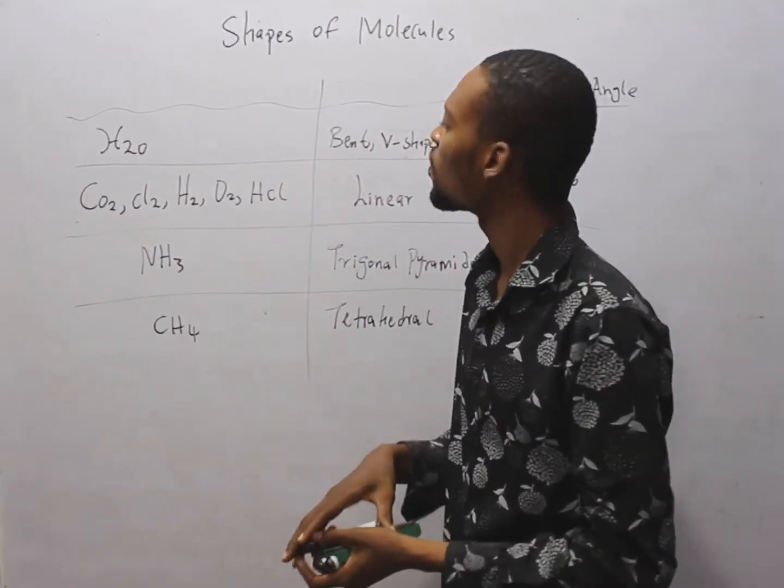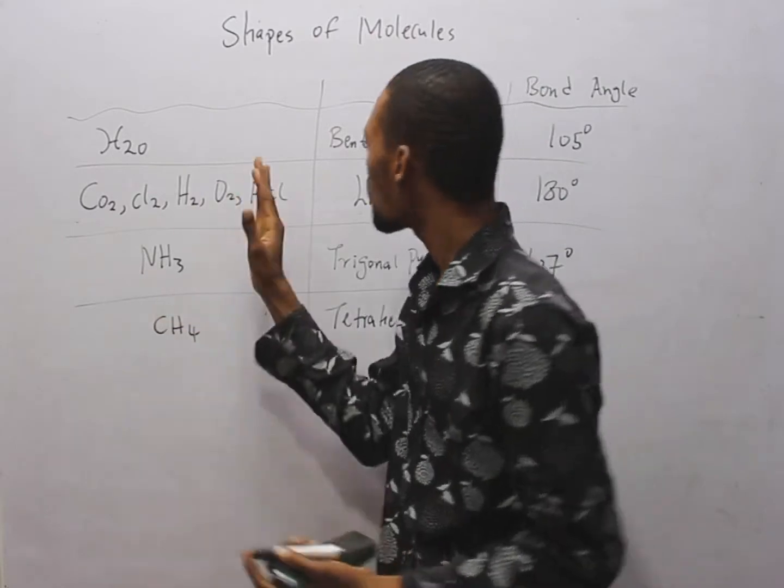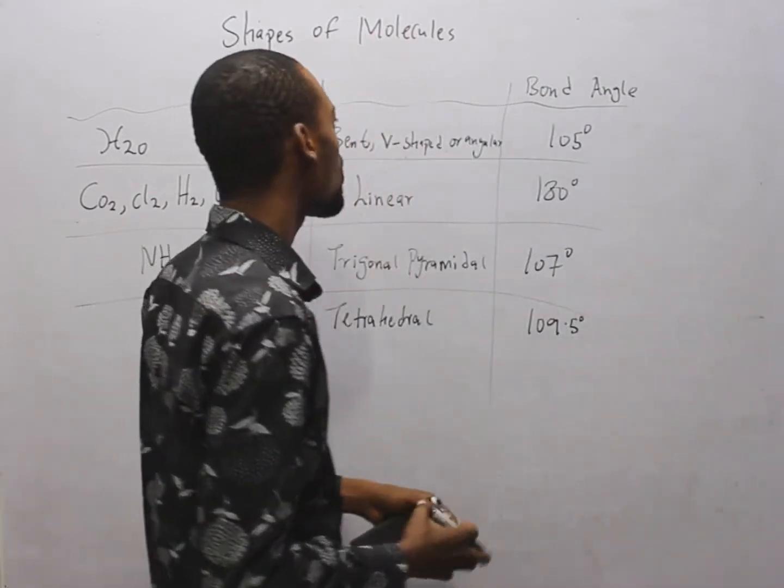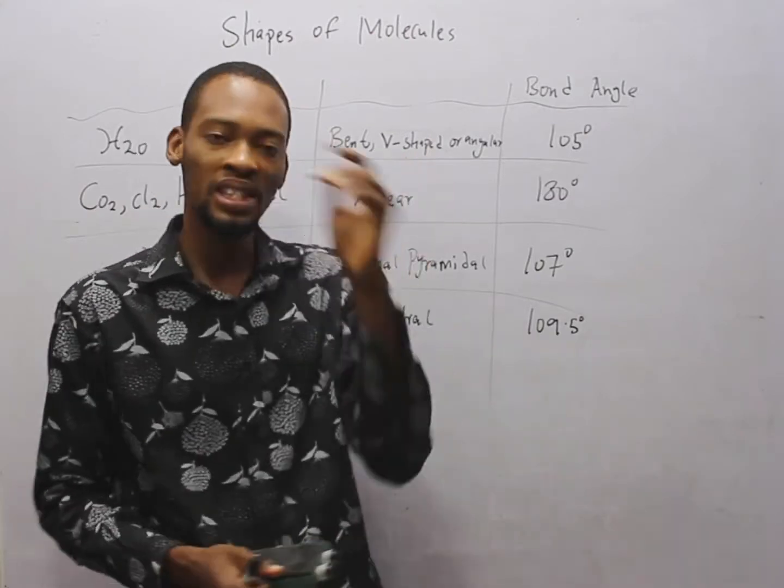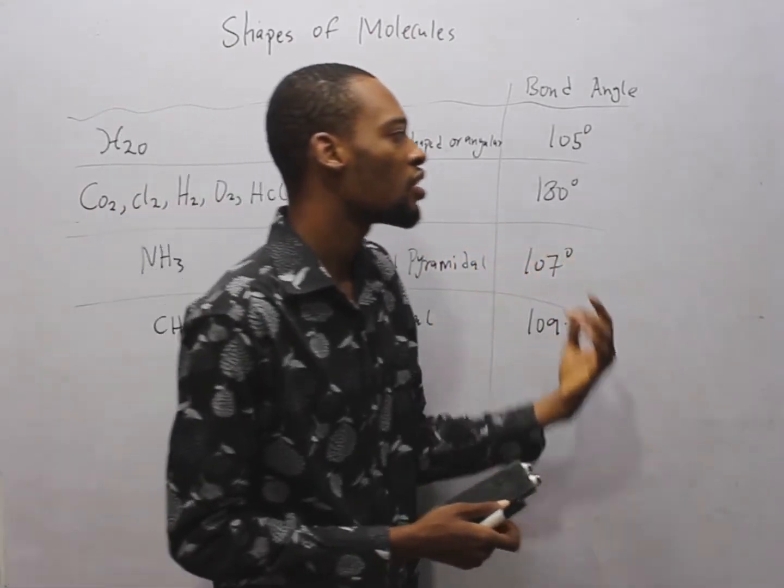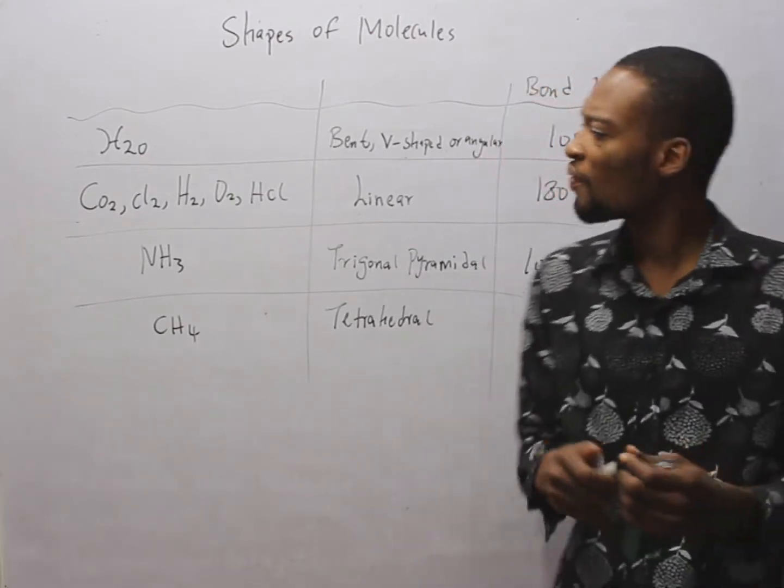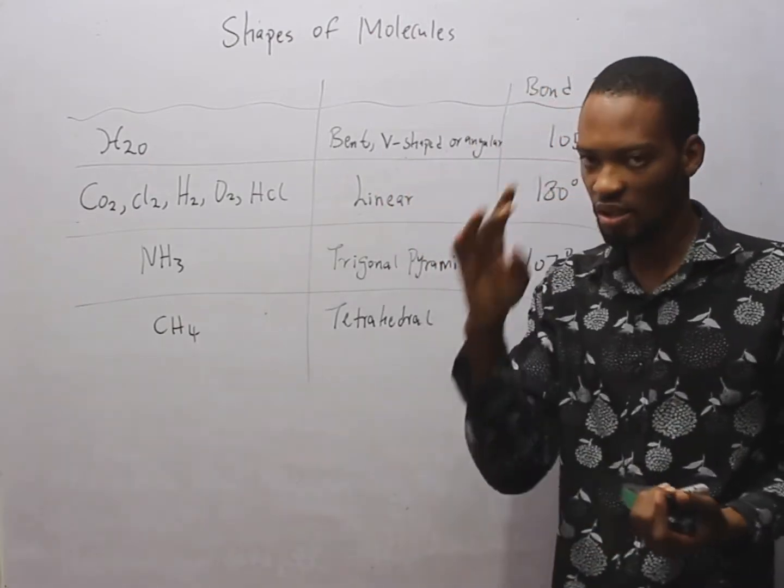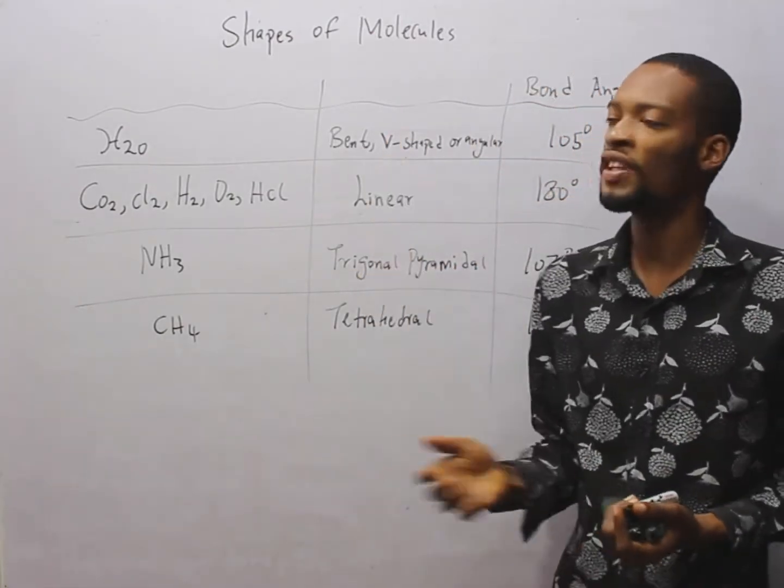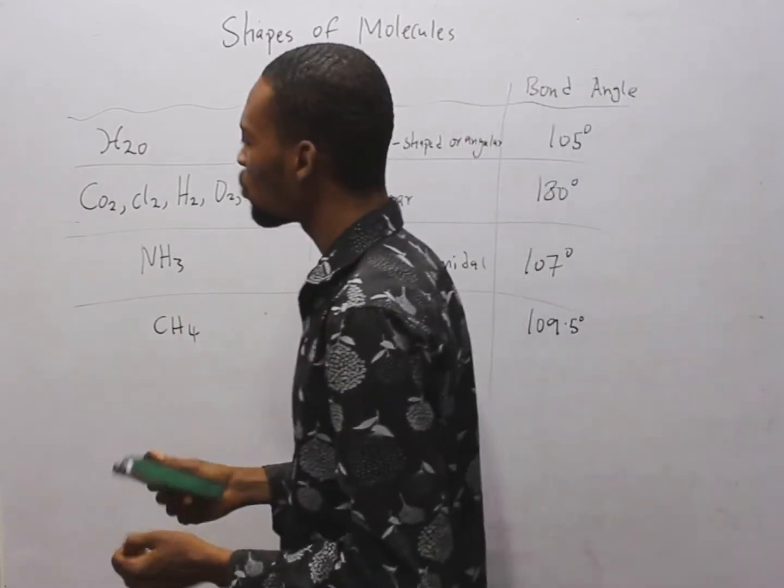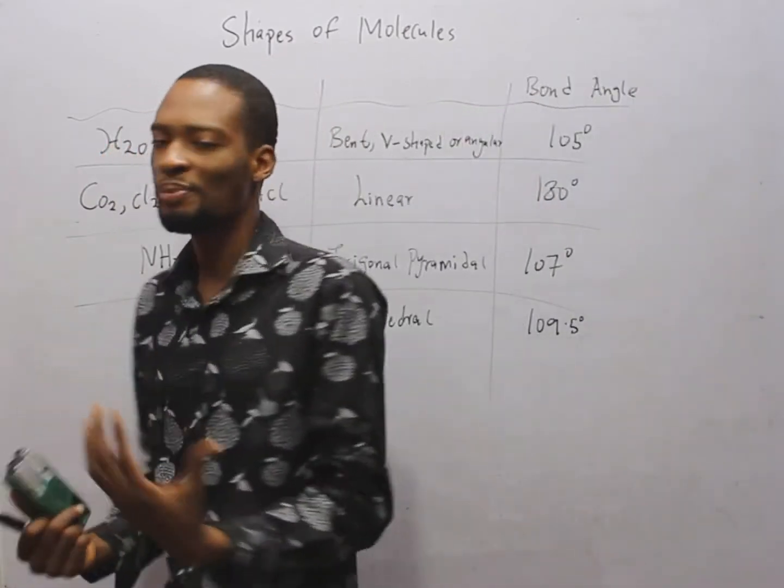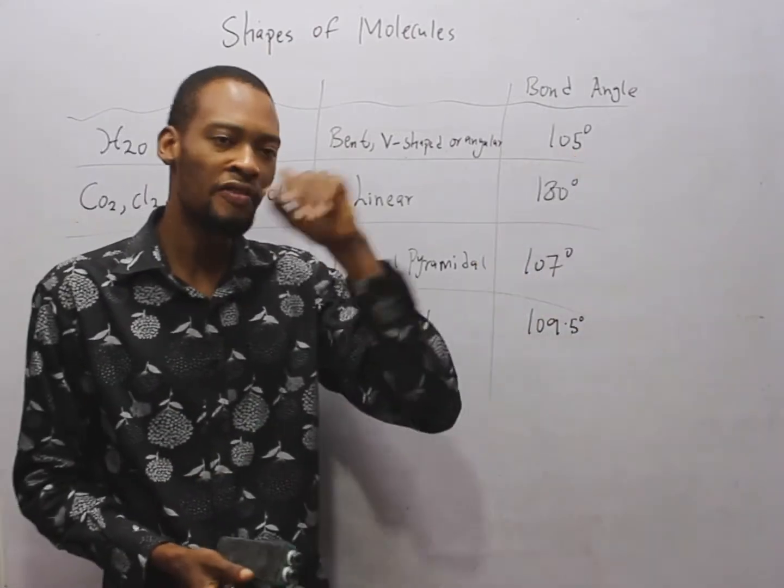What are the shapes of these molecules? Water has a bent or v-shape or angular shape. If it is an objective exam, any of these ones you see in the option is correct. Now, what is the bond angle between water? The molecules of water is bonded at 105 degrees.